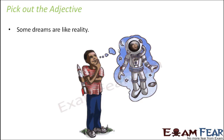One more example: Some dreams are like reality. The noun here is 'dreams.' How many dreams are like reality? Some dreams. This word answers 'how many,' so it is an adjective of number. You would never ask 'how much dream' because dreams are countable — I saw three dreams, ten dreams. So 'some' here is an adjective of number.